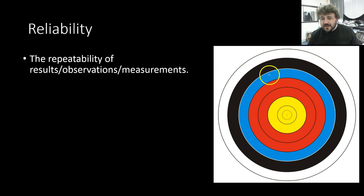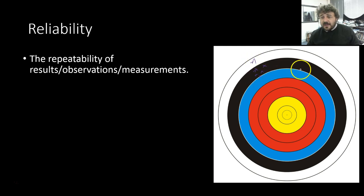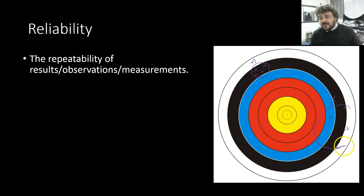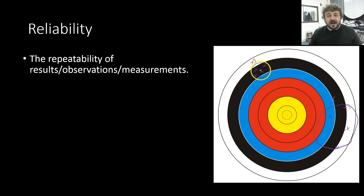We'll use an archery competition as our analogy. Here is Archer A and here is Archer B. Archer A is reasonably reliable — every time they take a shot, they're grouping it together. Their results are reasonably repeatable; they're all in the same area. Archer B, however, is all over the place. These results are really unreliable — there's a wide variance doing the same action.